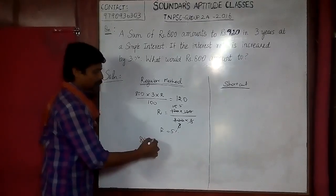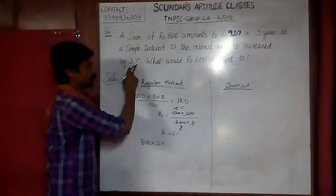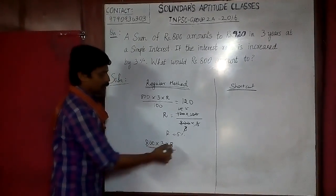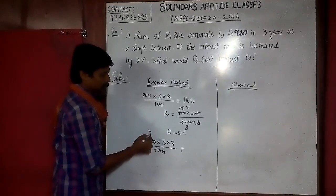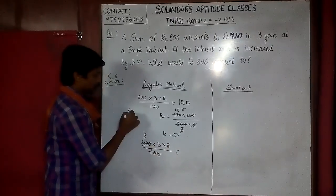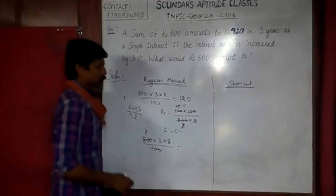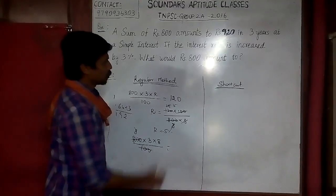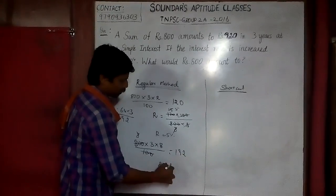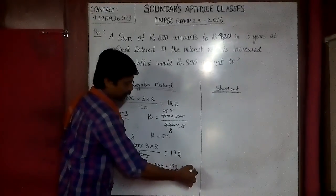The principal amount is the same. The number of years is the same. The rate was already 5%, now it is increased by 3%, so the new rate is 8%. Using PNR/100: 800 × 3 × 8 / 100 = 192. So the interest is 192, and the total amount is 800 + 192 = 992. This is the regular approach.